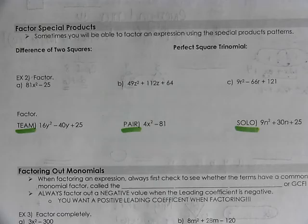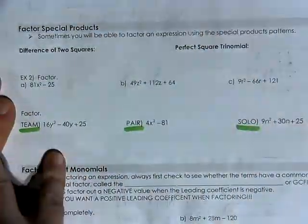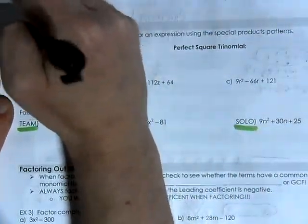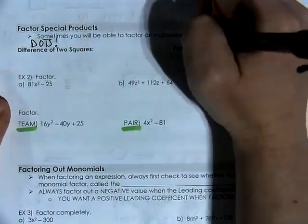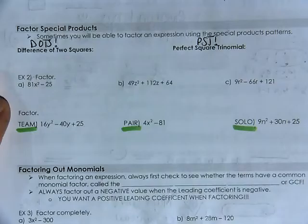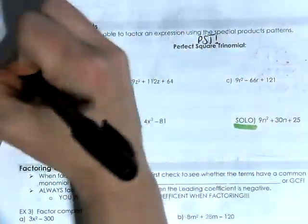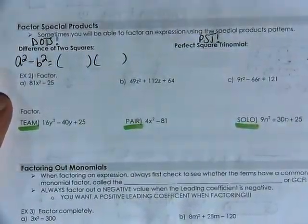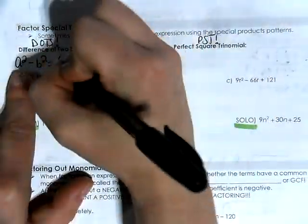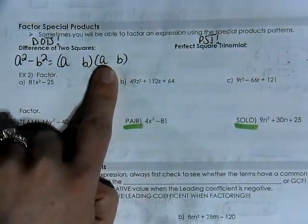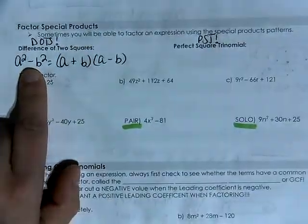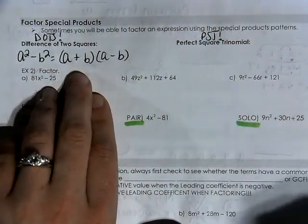Let's look at factoring patterns. Just like when a equals one, we still have difference of two squares (DOTS) and perfect square trinomials (PSTs). For DOTS: a squared minus b squared equals (a plus b)(a minus b). For example two: the square root of 81x squared is 9x, and the square root of 25 is 5. So 81x squared minus 25 factors as 9x plus 5 times 9x minus 5, making one parenthesis positive and one negative.